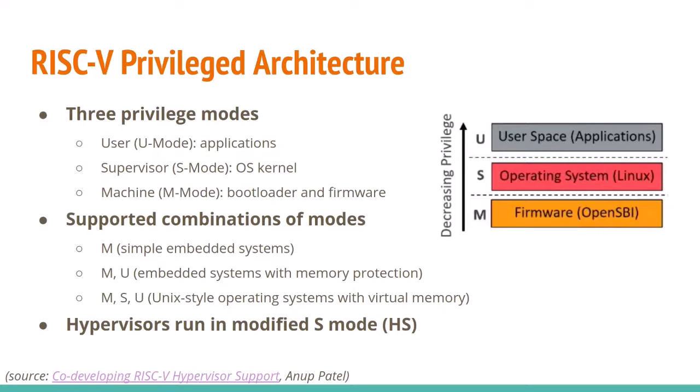The RISC-V privilege architecture has three different modes: machine mode (M mode) for bare metal like bootloaders or firmware; supervisor mode (S mode) where the OS kernel like Linux runs; and user mode (U mode) where applications run. Different combinations are supported: M alone for simple embedded systems, M and U for embedded systems with memory protection running an RTOS, and M plus S plus U for a Unix-style OS with virtual memory. There's also a hypervisor extension in draft that would give a modified S mode called HS.